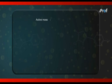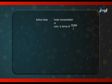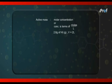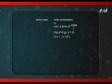A very important term for us here is active mass. Active mass for any substance is defined as its molar concentration — that is, concentration in terms of moles per liter. Remember, active mass for any substance is represented by putting its chemical formula within square brackets. For example, suppose we have 2.8 grams of HI gas enclosed in a vessel whose volume is 2 liters. It is given that the atomic mass of hydrogen is 1 and that of iodine is 127. Our job is to find the active mass of HI.